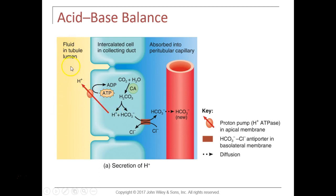In respiratory acidosis and alkalosis, the imbalances are due to abnormal CO2 levels. The PCO2 normal range is 35 to 45 mmHg. If CO2 rises above 45 mmHg, blood pH falls below 7.35 and you are in respiratory acidosis — from not breathing or breathing slowly. Common causes of respiratory acidosis include hypoventilation from emphysema, pulmonary edema, trauma to the respiratory center, or airway obstruction.